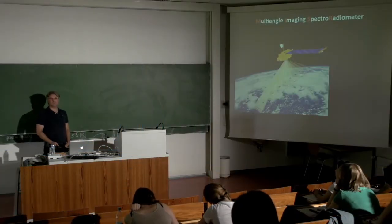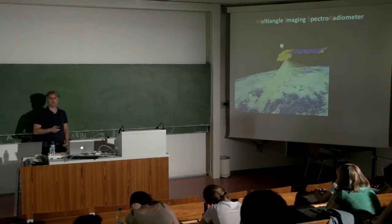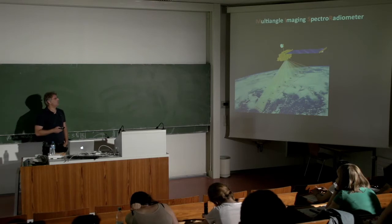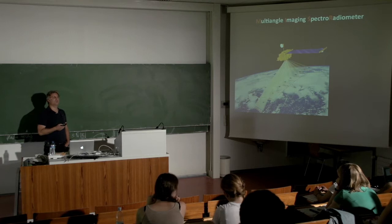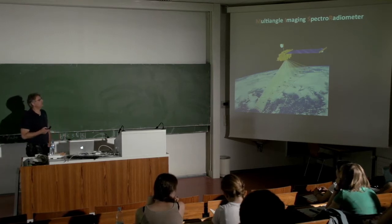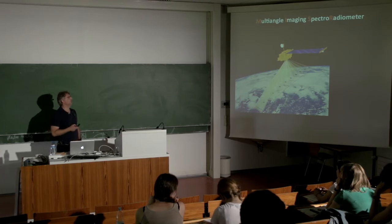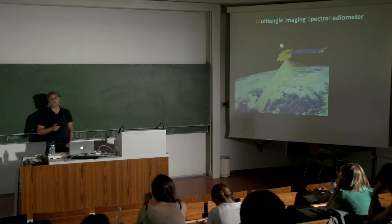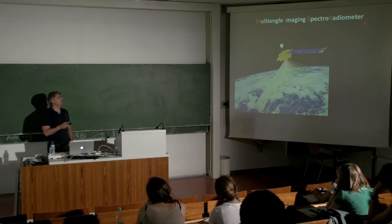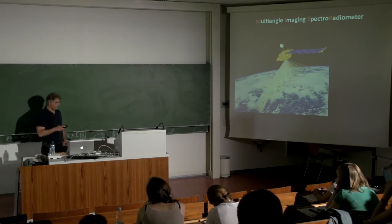Most of the previous presenters showed results from single-view instruments. Here I'm going to show examples from multi-angle remote sensing and use this as a framework to touch upon some of the issues and challenges we still have in the remote sensing of clouds, aerosol, and surface properties. Specifically, I will use examples from the Multi-angle Imaging SpectroRadiometer, or MISR instrument, which is on the Terra satellite.